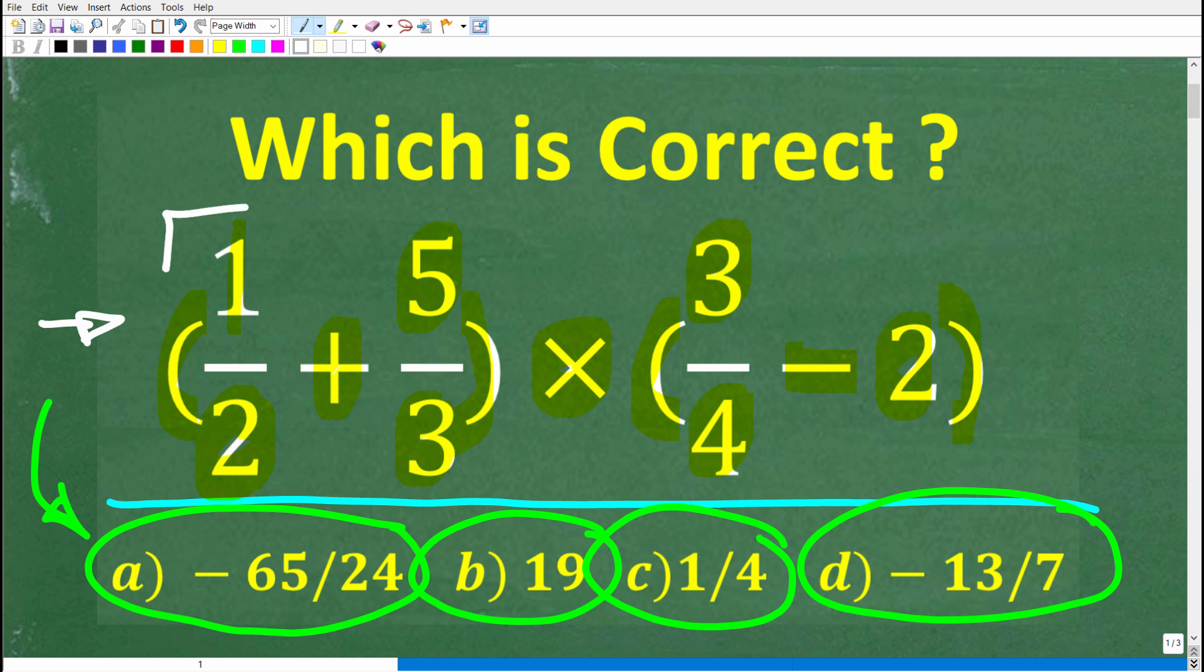Then of course, I'm going to walk through all the steps we need to take to figure this out. All right, so once again, parentheses, we have to add these fractions. I guess I'm giving you a little bit of a hint here. So we have to add these fractions, 1 half plus 5 thirds, and then we have to multiply by this. Of course, we have 3 fourths minus 2.